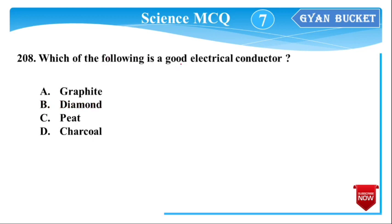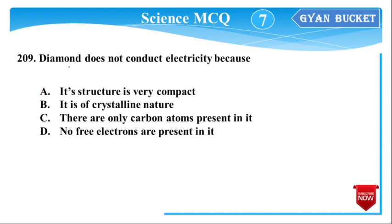Next question: Which of the following is a good electrical conductor? The answer is graphite — option number one. Diamond does not conduct electricity because it has no free electrons. Free electrons are necessary for conducting electricity.